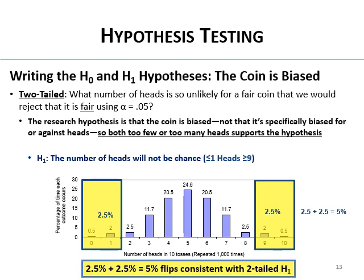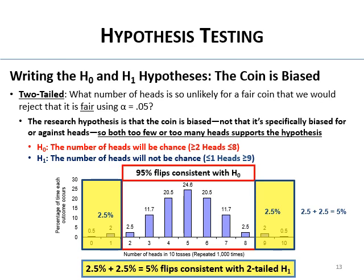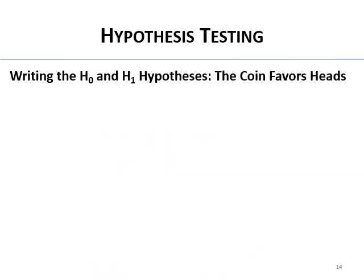We only reject if we get very few (zero or one) or way too many (nine or ten) heads. This is two-tailed because we didn't say the direction of bias. What if instead I said the coin favors heads? I'm picking a side — that's why it's called one-tailed. The hypothesis is specifically that it favors heads.